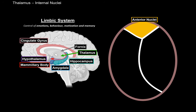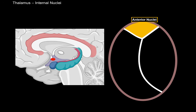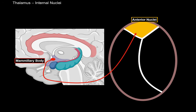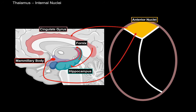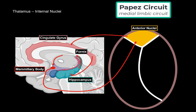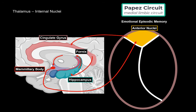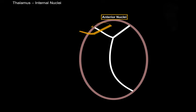This whole circuit is called the Papez circuit, and it gives you the ability to recall and re-experience past memory for emotional episodic memory. That is the anterior group of nuclei.